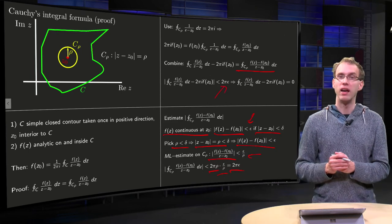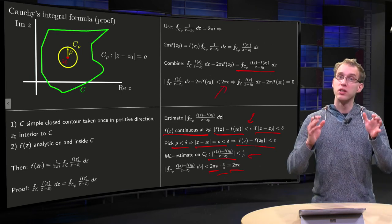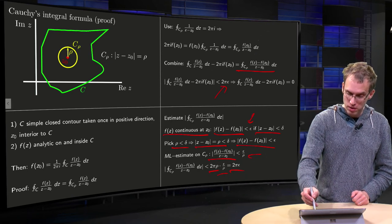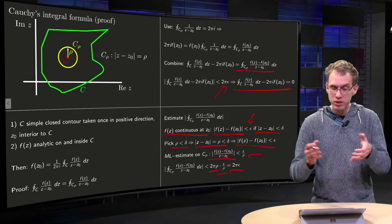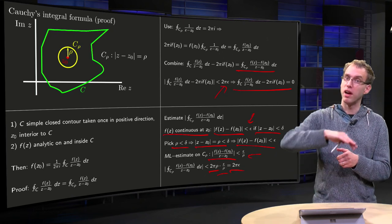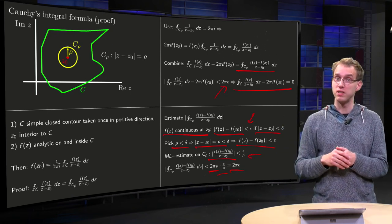And then you have the 2 pi epsilon over there, so that means that this quantity over here equals zero, which gives us the Cauchy integral formula if you bring the 2 pi i times f(z0) to the right and divide by 2 pi i.